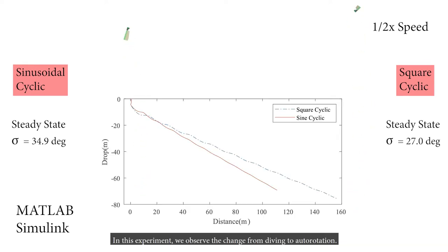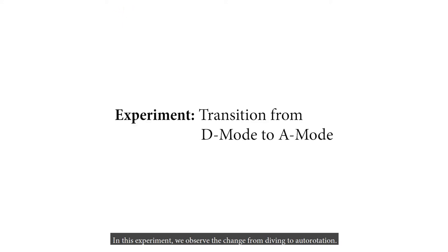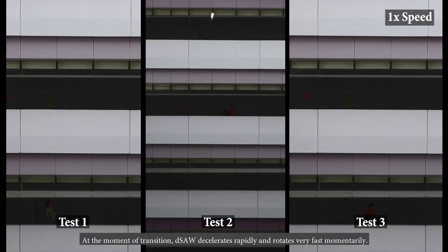In this experiment, we observed the change from diving to autorotation. At the moment of transition, D-Saw decelerates rapidly and rotates very fast momentarily.